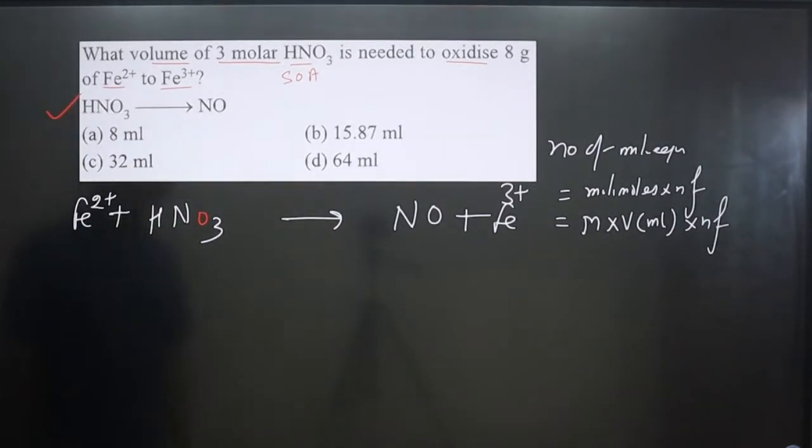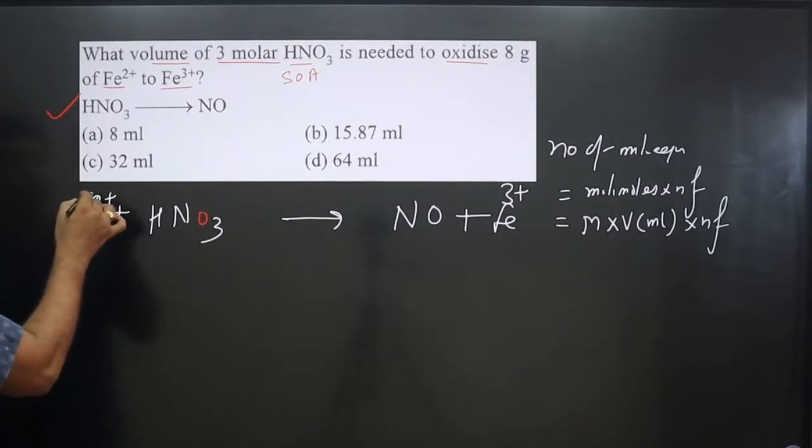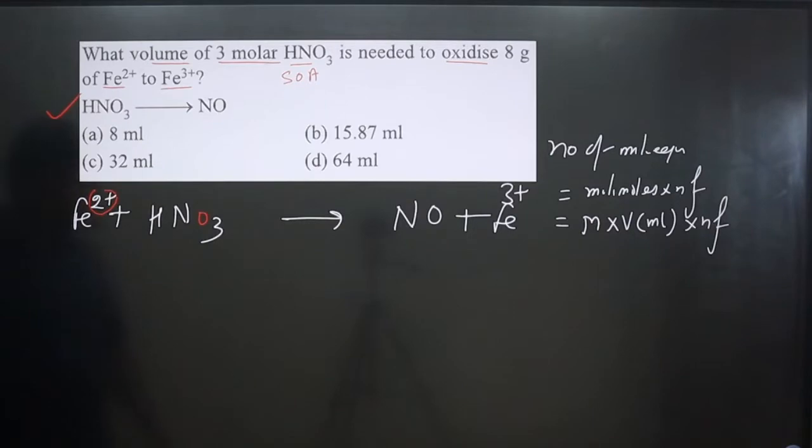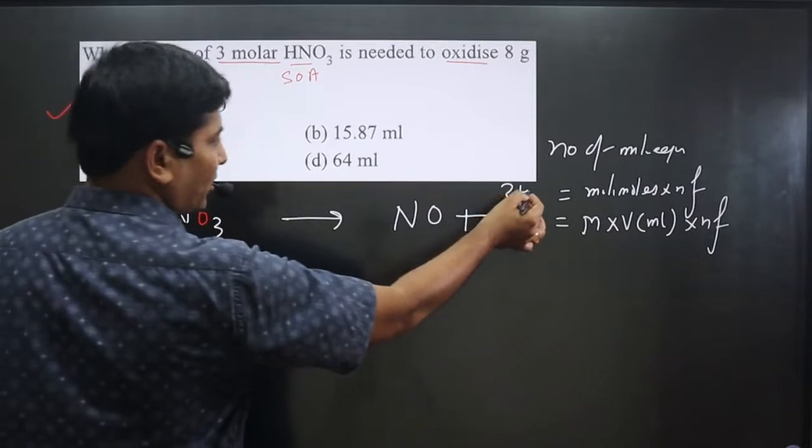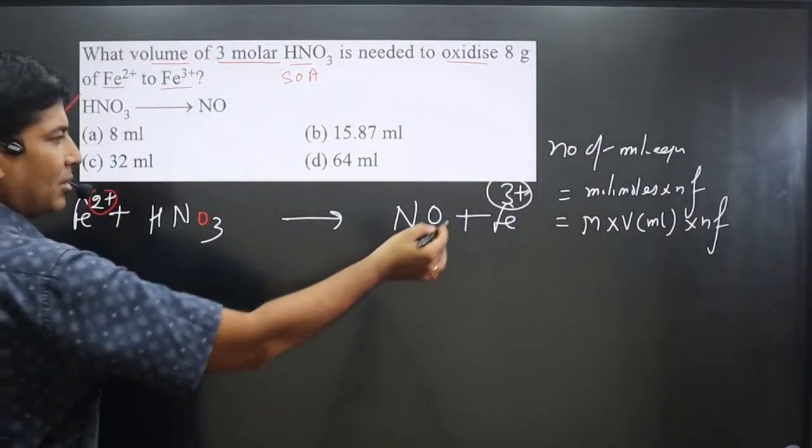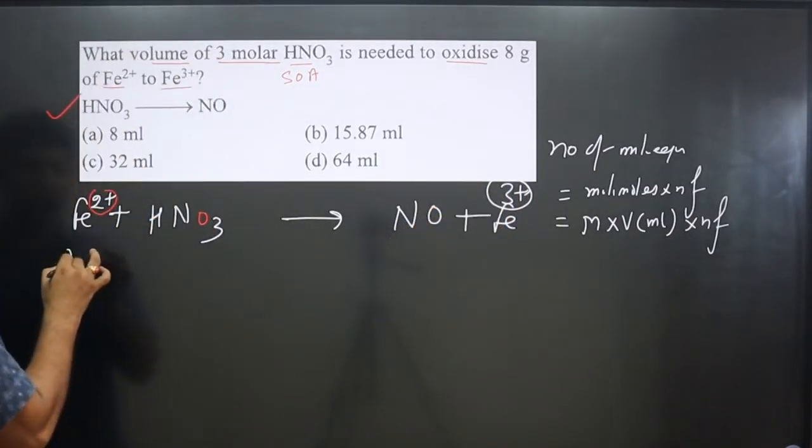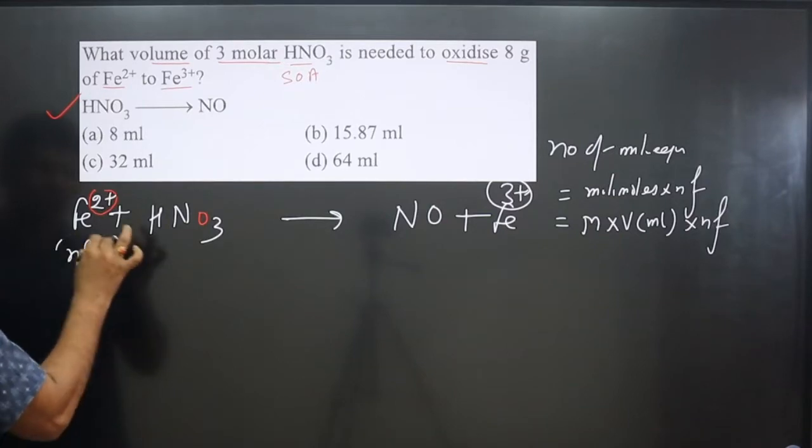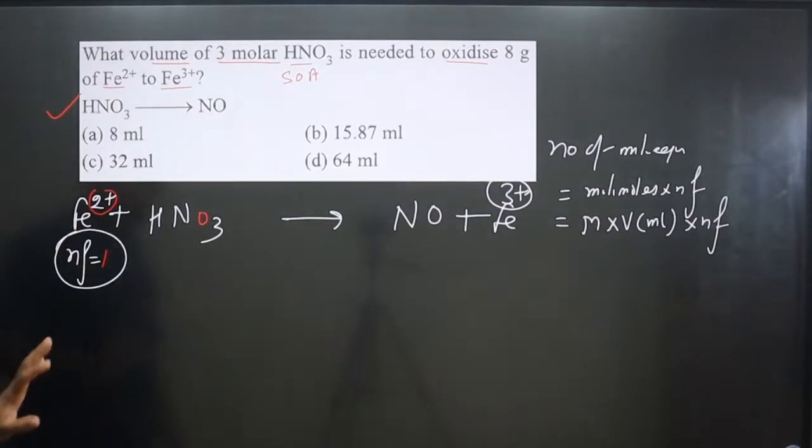First of all, we write down the oxidation number of the same element on both sides of the equation. You can see this is a monoatomic ion. The charge of monoatomic ion is equal to its oxidation number: plus 2. Other side it is plus 3. Difference in oxidation number: 3 minus 2 equals 1. N-factor is the difference in oxidation number, so n-factor is 1 for Fe²⁺.